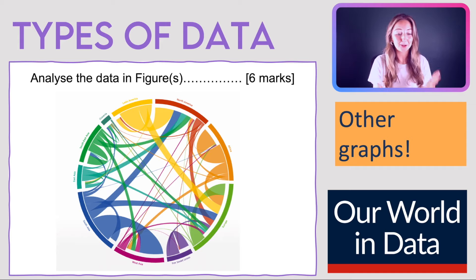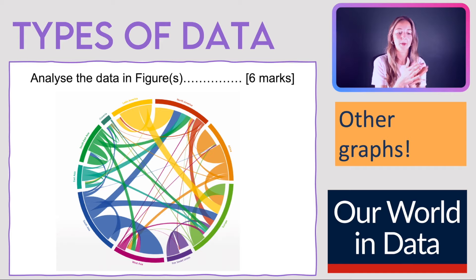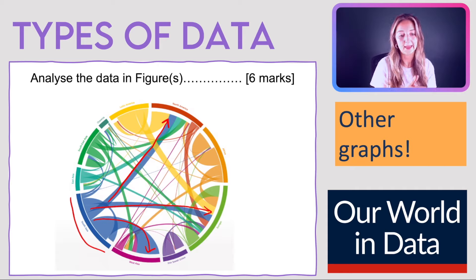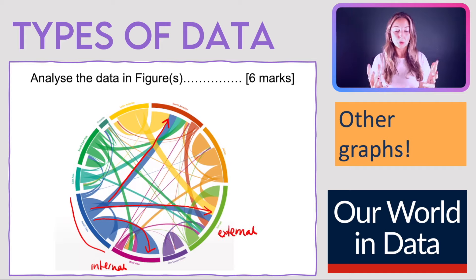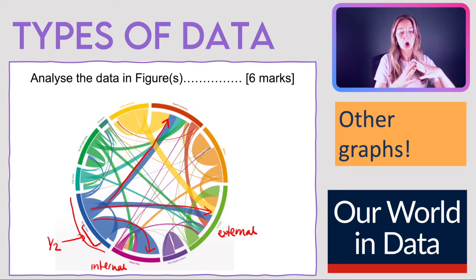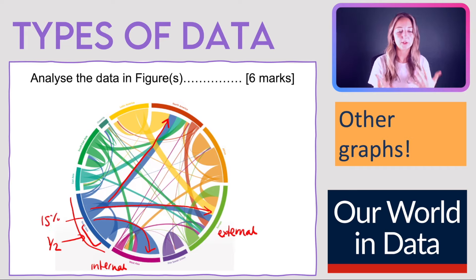For complex flow or chord-type charts, the examiner will tell you how to interpret them, but as a tip: here South Asia is blue — that's where migrants come from — and the thick lines show destination. For example, most South Asian migrants go to West Asia, with thinner lines going to Europe and North America. Look for the most and least migration, internal versus external, and use proportions by eye: for example, over half of migrants from South Asia go to West Asia and about 15% go to North America.